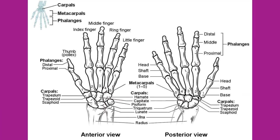The fingers and thumb contain 14 bones, each called a phalanx, named after the ancient Greek phalanx, a rectangular block of soldiers. The thumb (pollex), digit number 1, has two phalanges: a proximal phalanx and a distal phalanx. Digits 2 through 5 — the index finger through the little finger — each have three phalanges: proximal, middle, and distal. An interphalangeal joint is one of the articulations between adjacent phalanges of the digits.